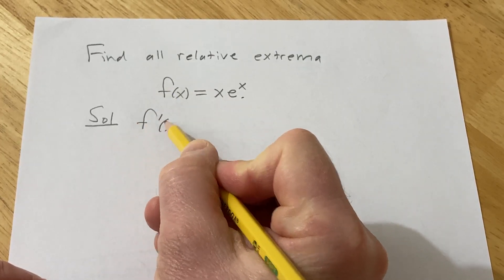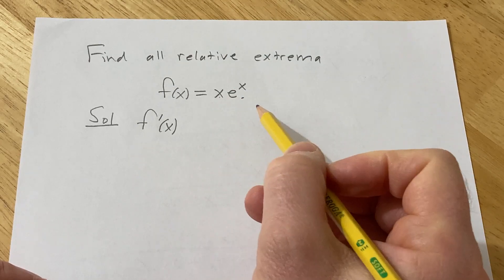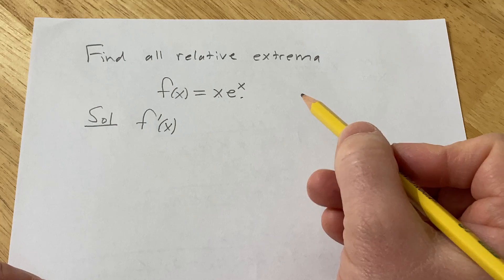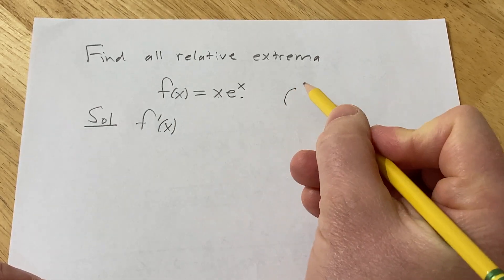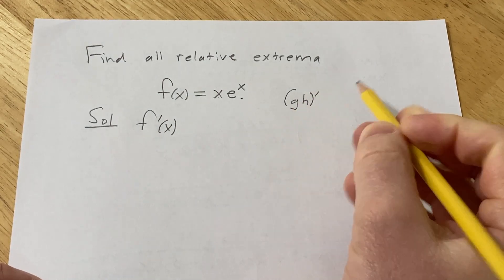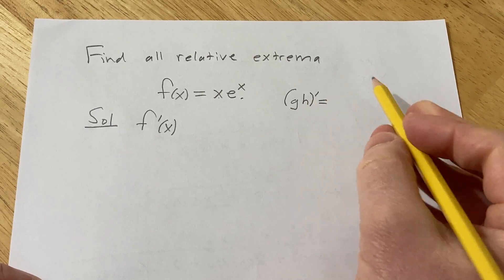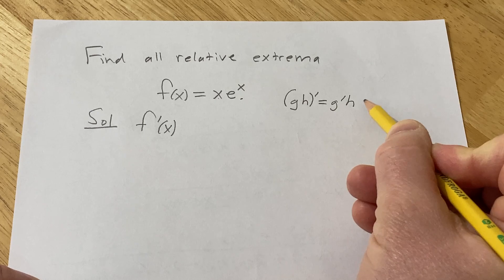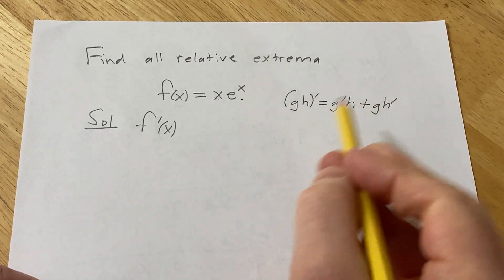So f prime of x. We have a product here: x times e to the x. So to find the derivative we're going to use the product rule. Recall the product rule says if you have g times h, think of g as your first function and h as your second function.